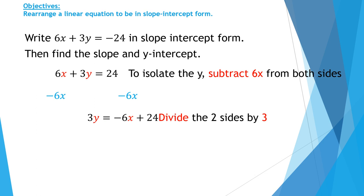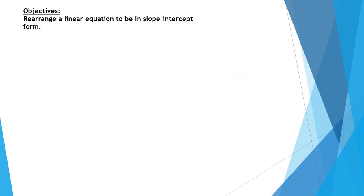I don't want a coefficient on y other than 1, so I divide both sides by 3 to get y equals negative 2x plus 8. Now the equation is written in slope intercept form, so I can pick out the slope and the y-intercept. The slope is the coefficient of x, which is negative 2. The y-intercept is the constant number, which is 8.